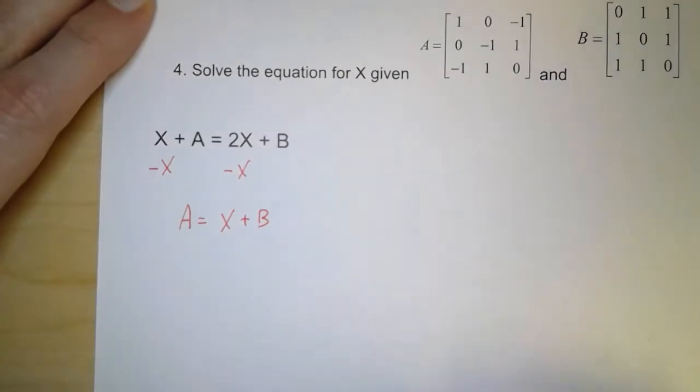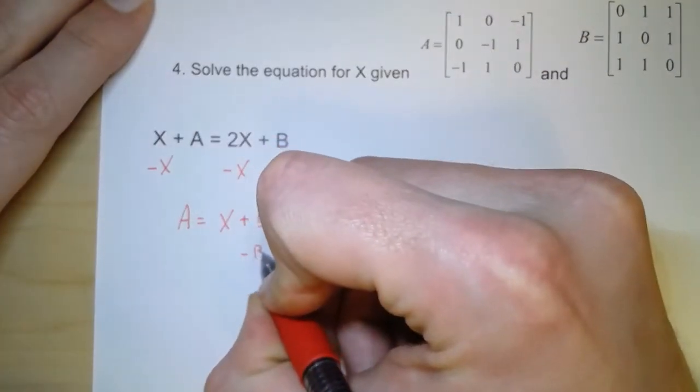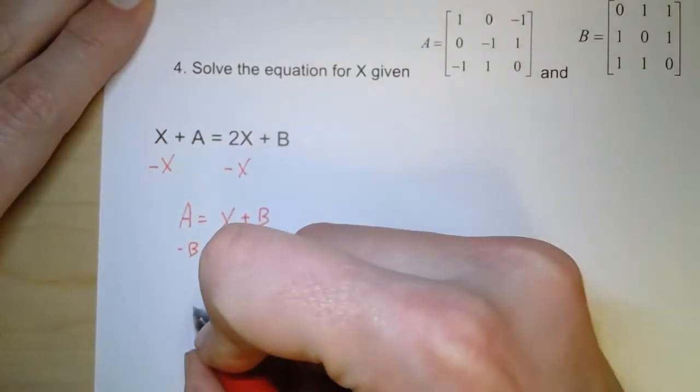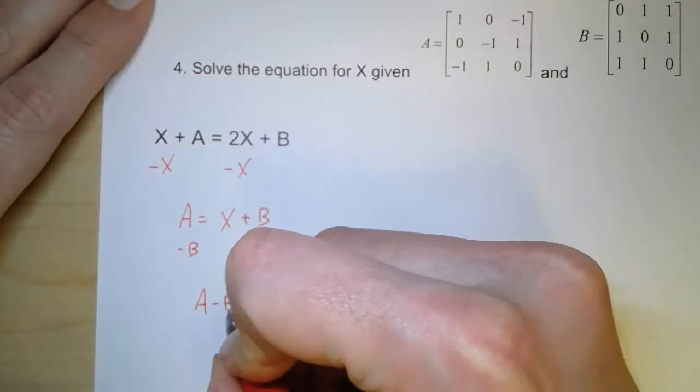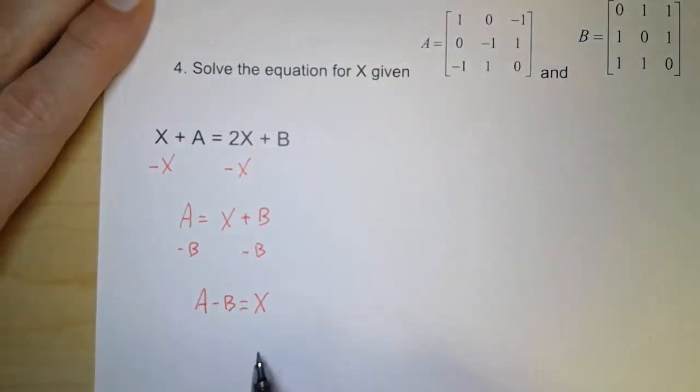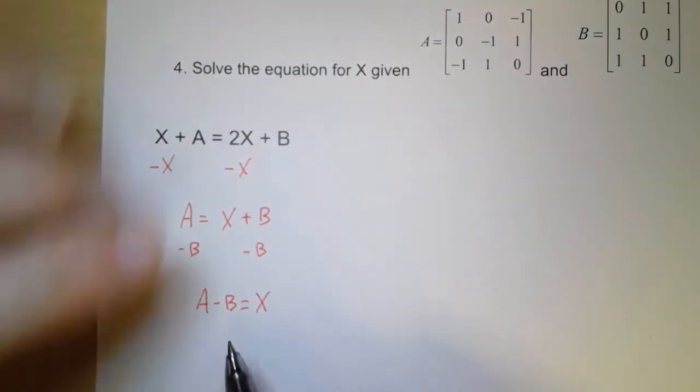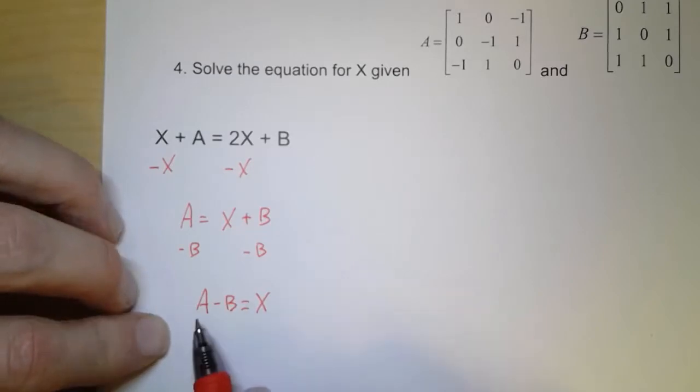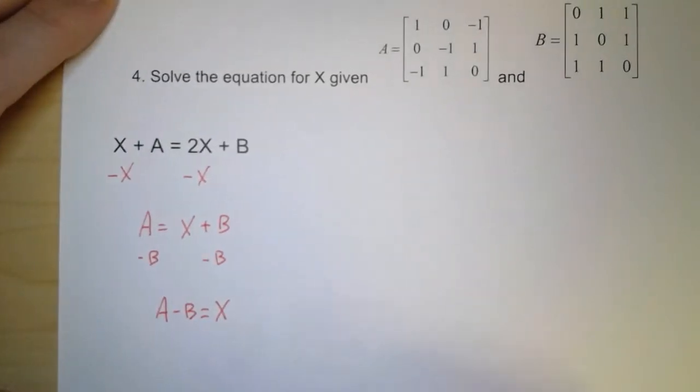So by doing that, I'm left with capital A equals x plus b. And then to get x by itself, I have to subtract b from both sides. So that means A minus b equals x. And again, these are all capital letters, these are matrices. But what this is telling me is that whatever x is, is equal to matrix A minus matrix B.